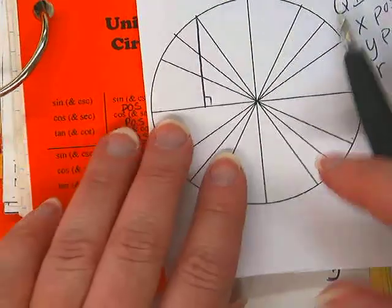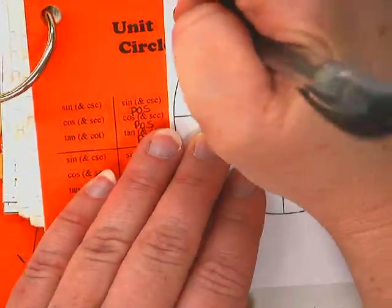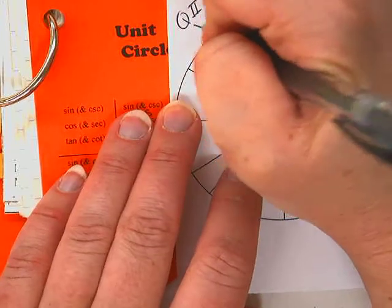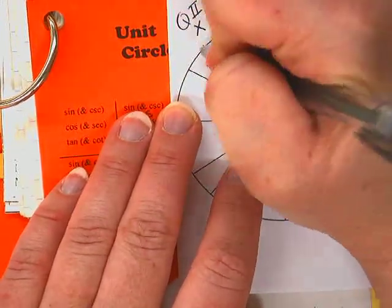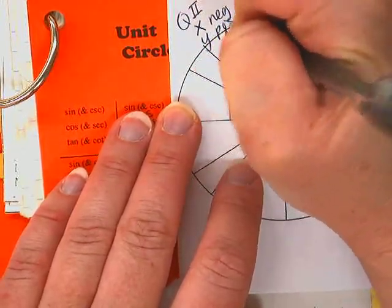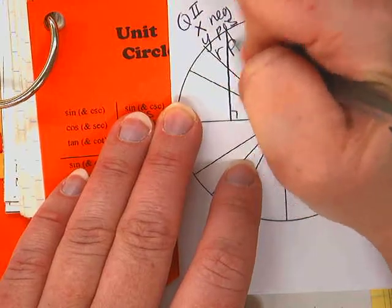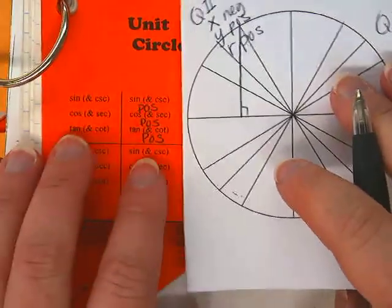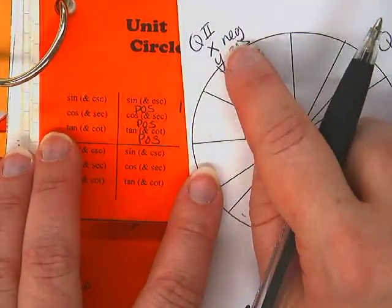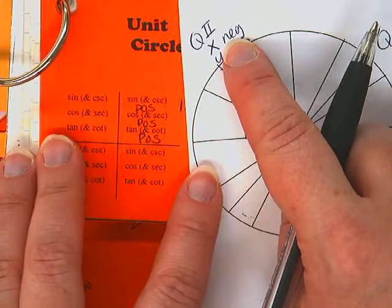Alright, the next quadrant. Quadrant 2: x is negative, y is positive, and r is positive. r is always positive. So let's think about which ratios use x, because that's the important thing.